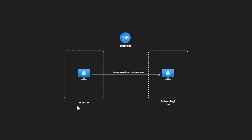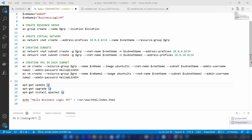Let's say you have an architecture with a web tier subnet and a business logic tier subnet, and you want to access the business logic tier from virtual machines in the web tier. Instead of using an IP address, you want to use a domain name like 'business logic dot my cool app'. For this you can use an Azure DNS private resource.